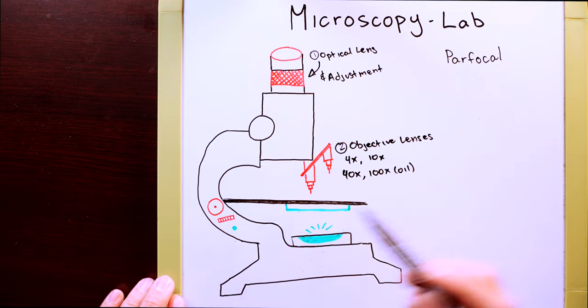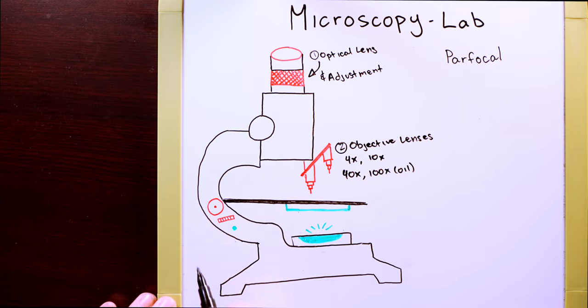Moving over to the side here, we have our coarse, the outer circle, as well as our fine adjustment, the inner circle.